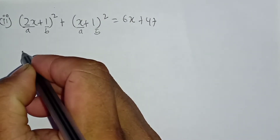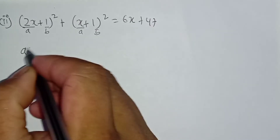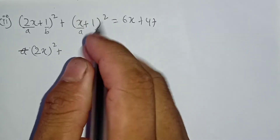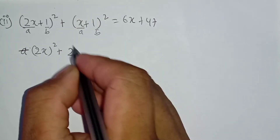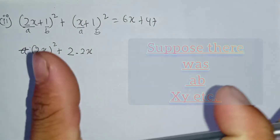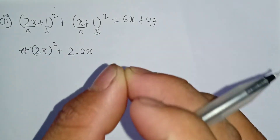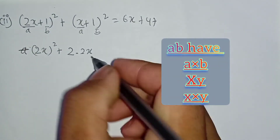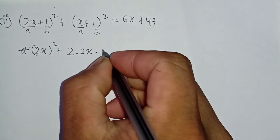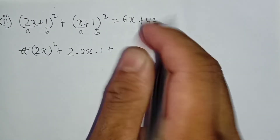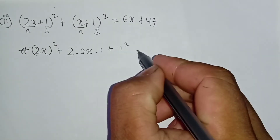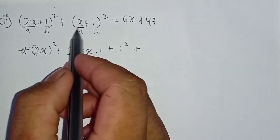So a squared — sorry, a squared plus 2 — when you come to it, 2x times a times b, and this is a multiplication. So a dot b when you come to it, plus b squared — when you go, one squared is one squared.